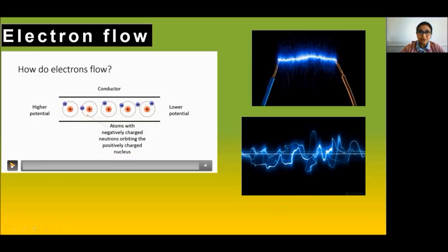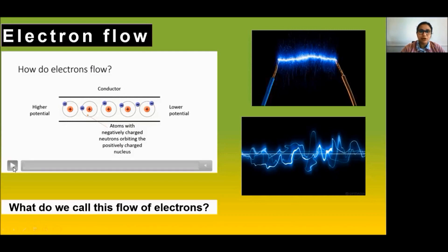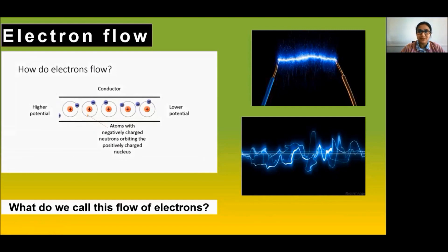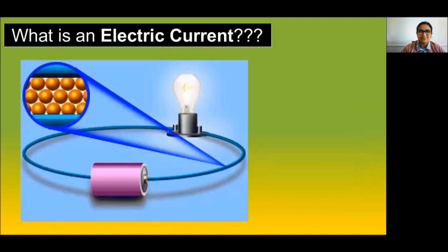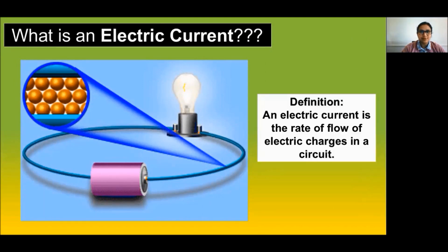How do electrons flow? Electrons flow from a higher potential to a lower potential region. We call this flow of electrons electric current.